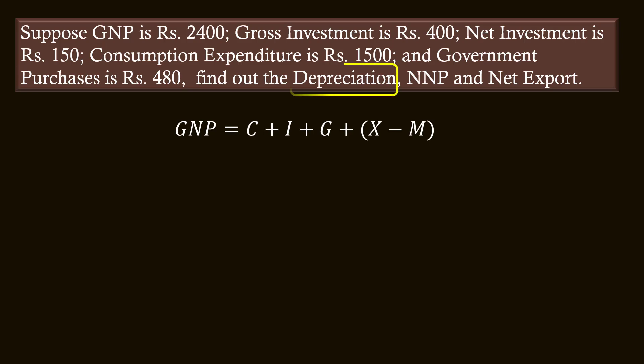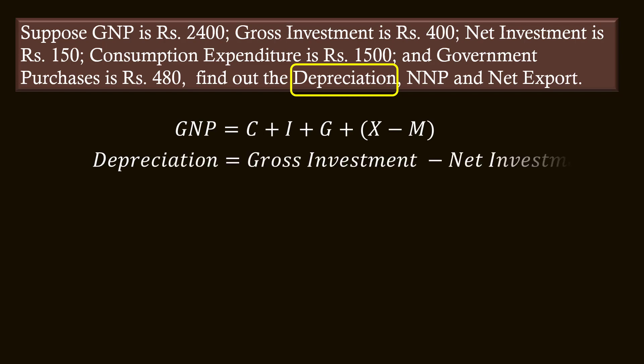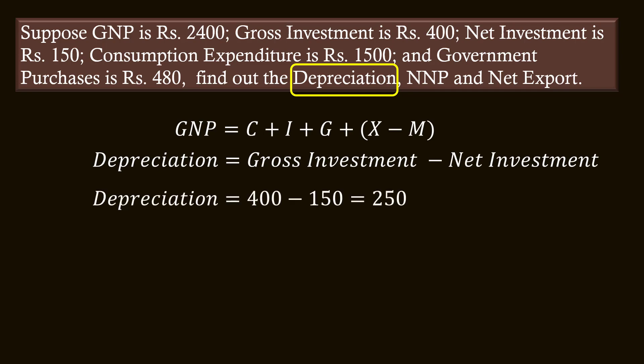The first value to calculate is Depreciation. We know: Depreciation = Gross Investment minus Net Investment. Substituting the values: Depreciation = 400 minus 150 = 250 rupees.